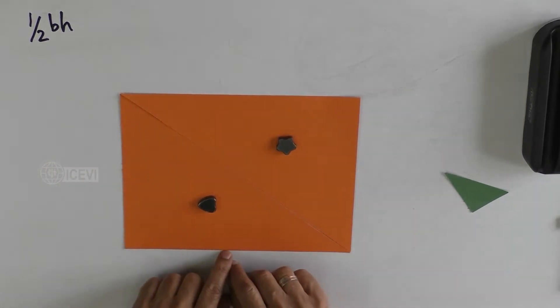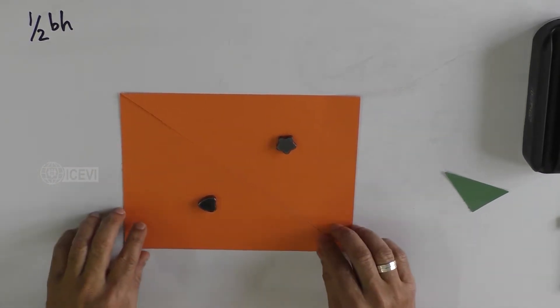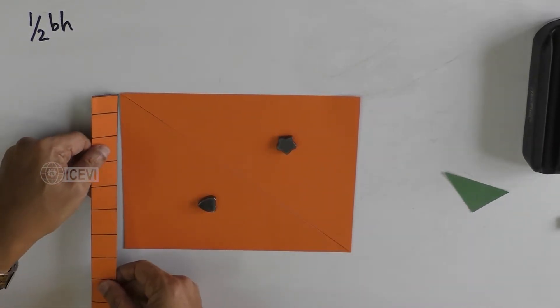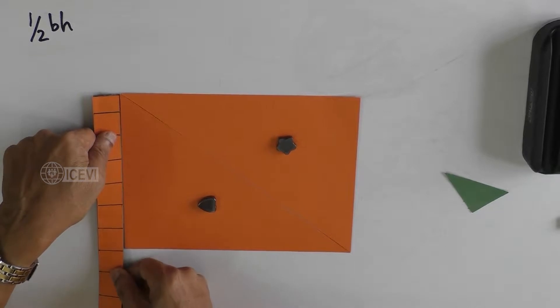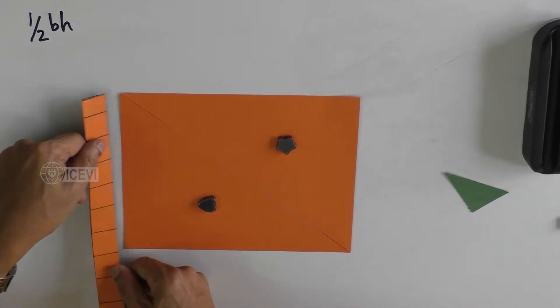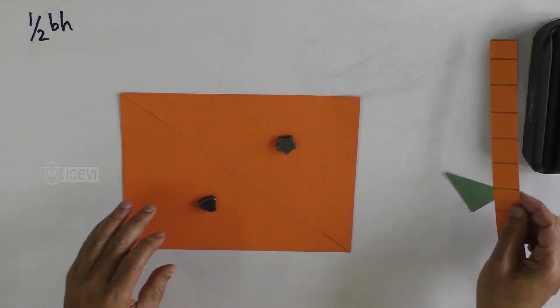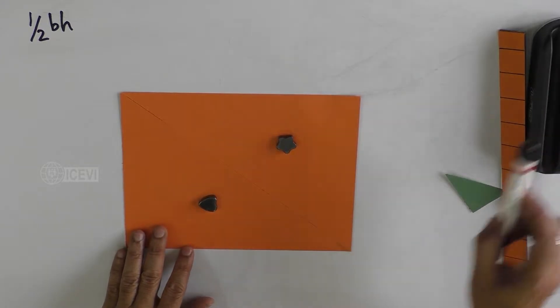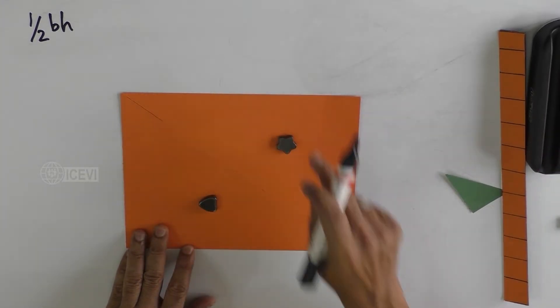All the four angles are right angles. Then you can measure the length of the sides horizontally and then vertically and you can notice that the opposite sides are equal. What is the area of the rectangle?